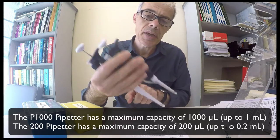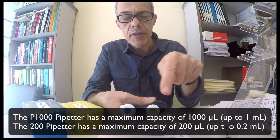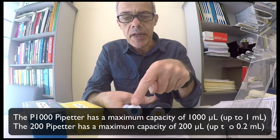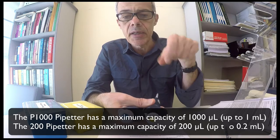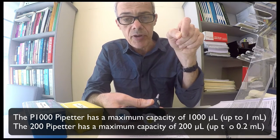So this is the P1000 and this is the P200, named according to the maximum volume they can dispense expressed in microlitres.